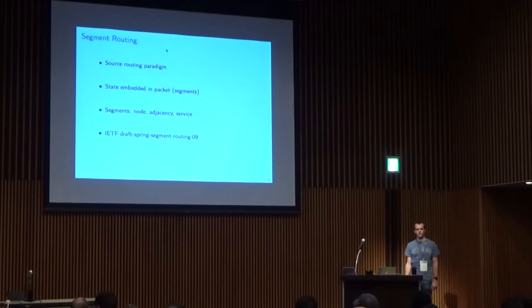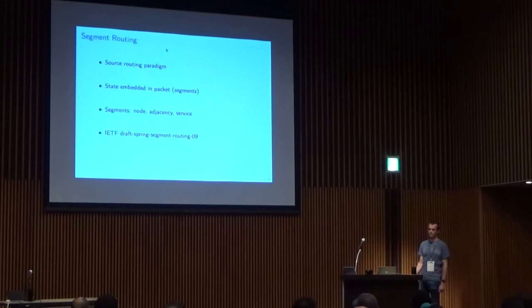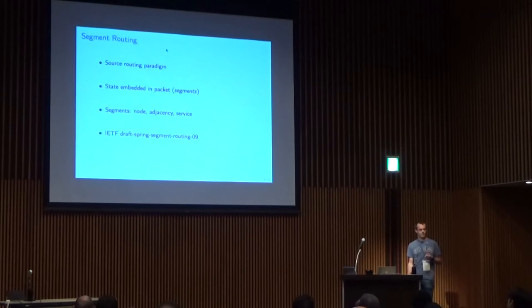Segment routing has been developed for now like three or four years by the IETF, and it is a source routing paradigm. Instead of having each router decide the next hop based on the final destination address of the packets, each packet contains a state, which are actually segments. Each segment is basically a sort of waypoint that can represent either a node by itself, an adjacency segment meaning a given node has to forward the packet through a particular interface, or service segments representing a particular service that has to be applied to the packet.